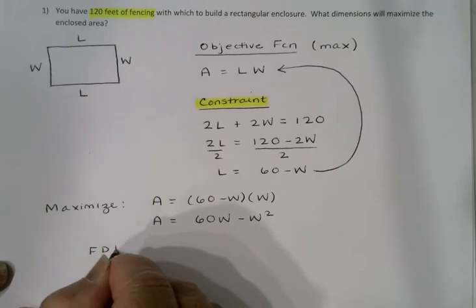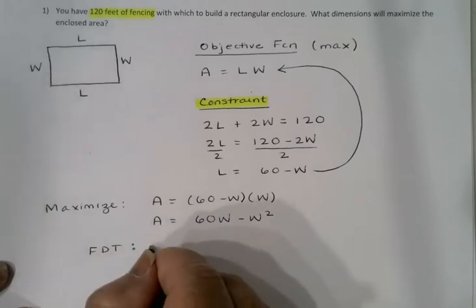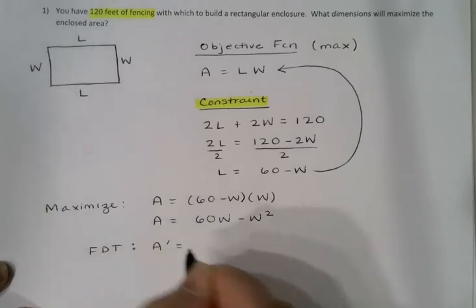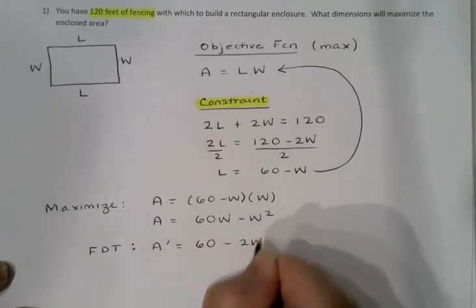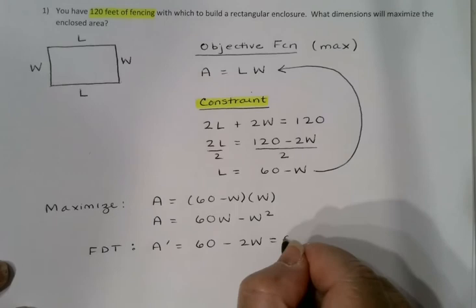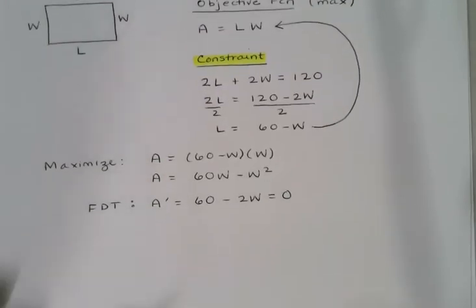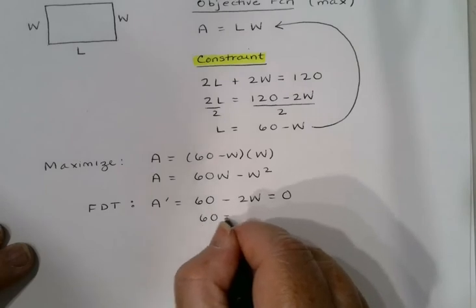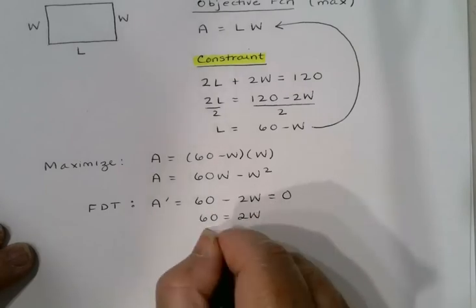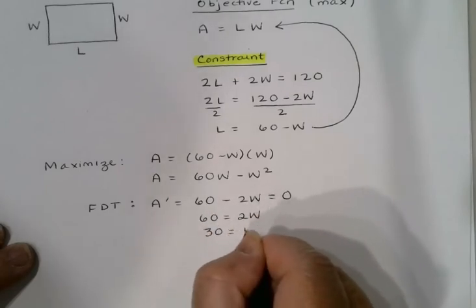I'll perform a first derivative test on this. So A' = 60 - 2W, and critical values are where that would be equal to 0. So 60 = 2W, and W = 30.